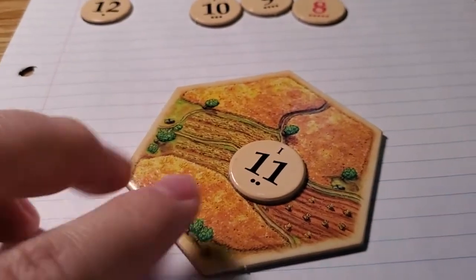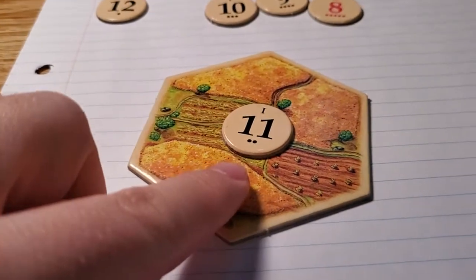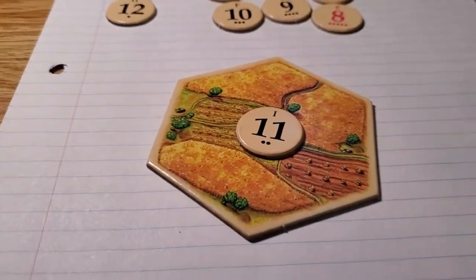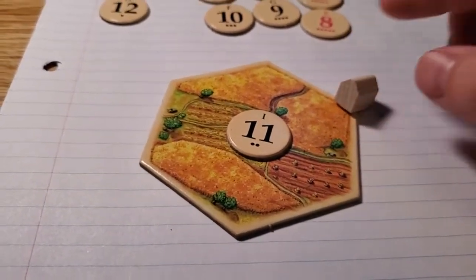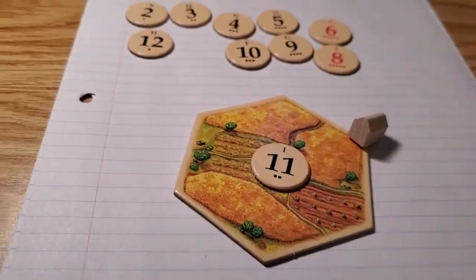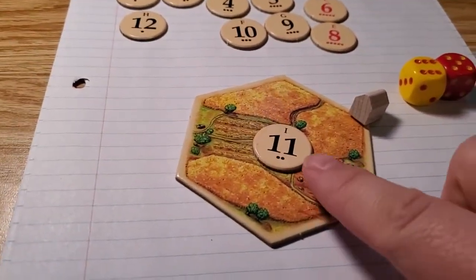So I have a tile here, it's yellow, which is for wheat, and there's a number on it, it's 11. That means that if there's a settlement, for example, this one, that's been built on the corner of it, when an 11 is rolled, so with these two dice, let's say it's an 11, oh, it actually is.